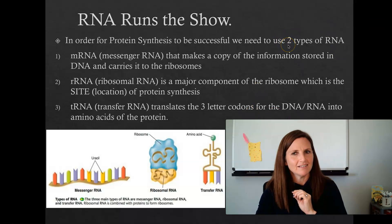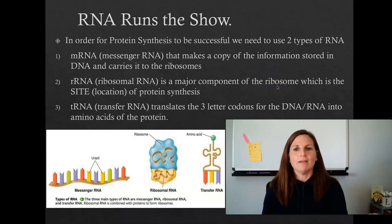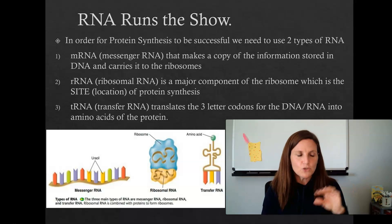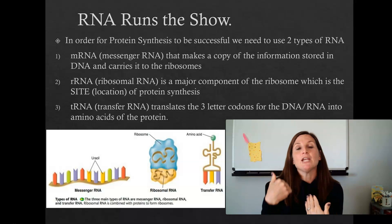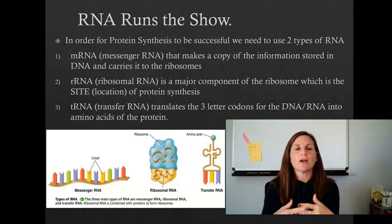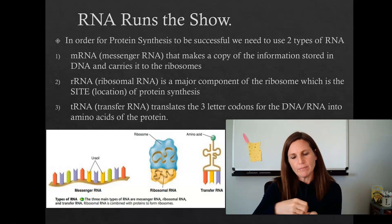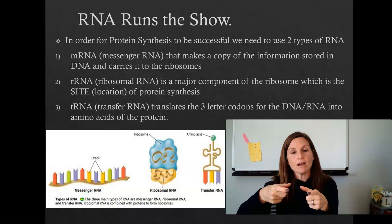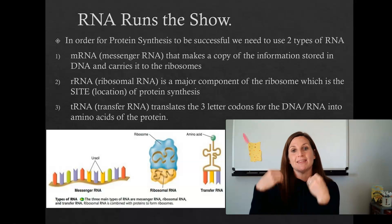We use three types of RNA — mRNA, rRNA, and tRNA. mRNA makes the copy from our DNA. It's like if you had a great recipe at home and a guest asked for it — you wouldn't give away your original recipe, so you'd quickly write down a copy and hand it to them. That recipe card is the messenger RNA: a copy of the stored information.